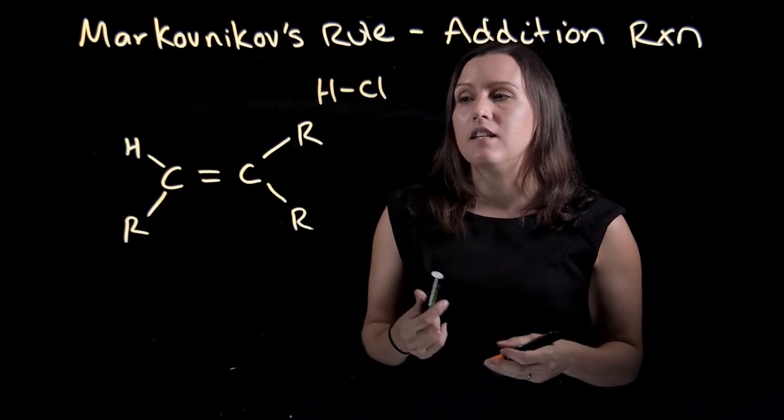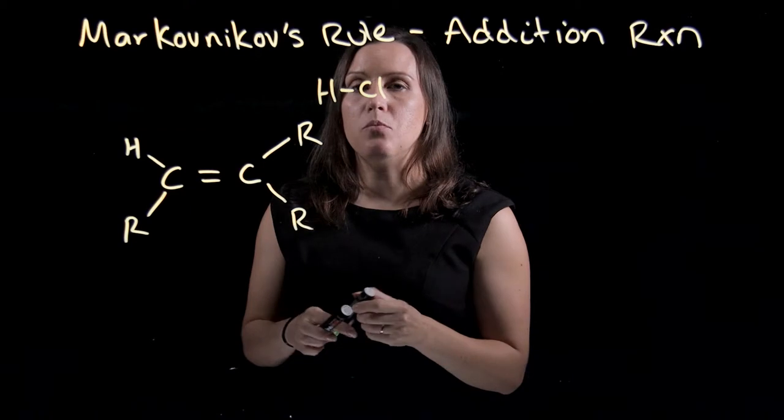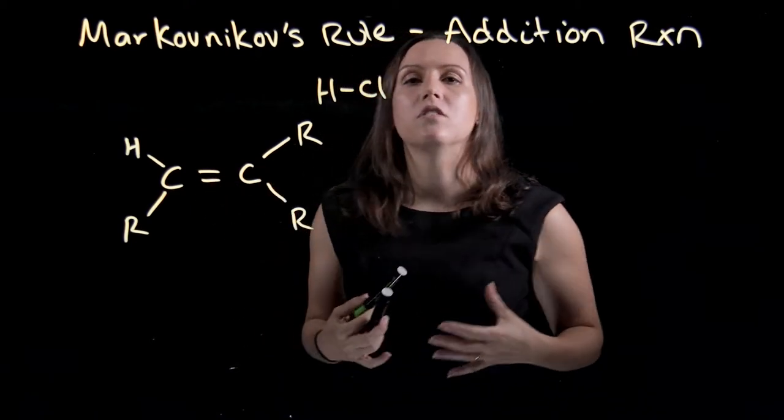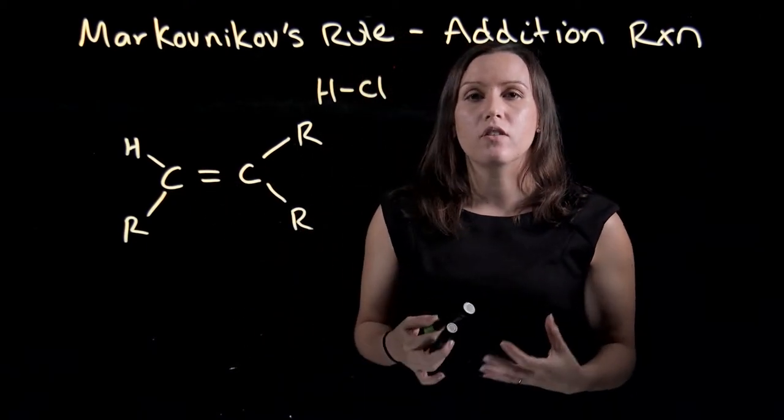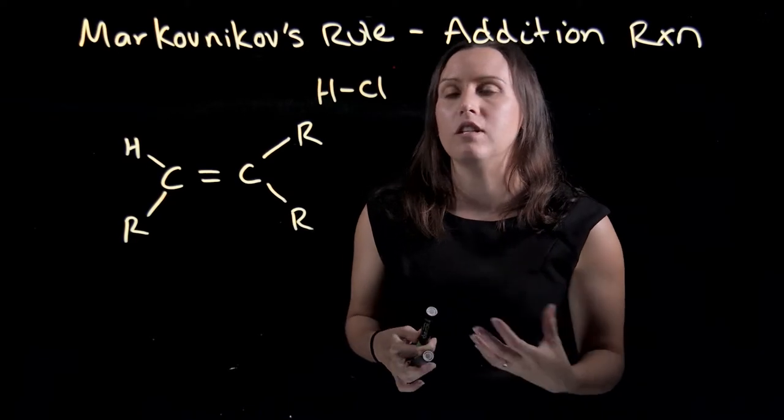The first step in this mechanism is the breaking of the double bond. Remember, the double bond has got an extra two electrons over the single bond, so it's an electron-rich area.